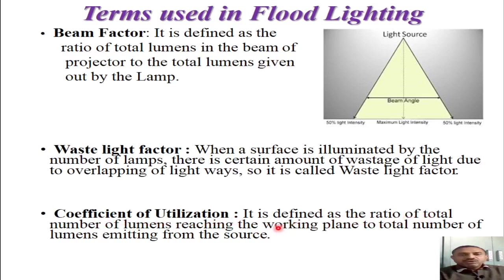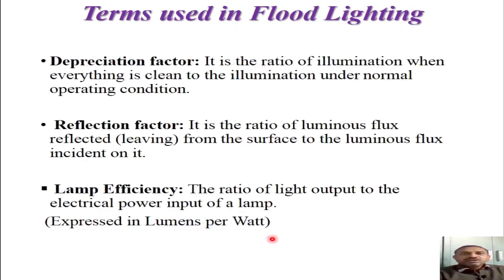The third important factor is the coefficient of utilization. It is defined as the ratio of total number of lumens reaching the working plane to the total number of lumens emitted from the source. As the projector is placed at a certain distance from the surface to be illuminated, not all lumens produced by the projector will reach the working plane — some will be lost in the medium. So we have to consider the utilization factor in flood lighting projector calculations.